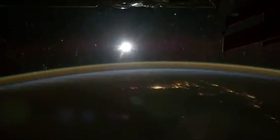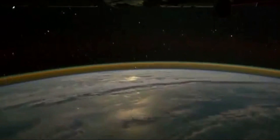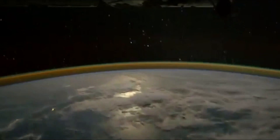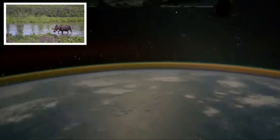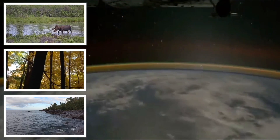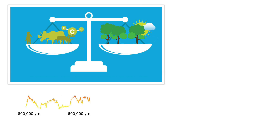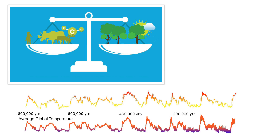Just like the water cycle, there is a natural carbon cycle present in our atmosphere. Carbon is the building block of life on Earth, and there is a natural carbon cycle between animal life, forests, and oceans. This cycle has been known to be in balance for over 800,000 years, with natural atmospheric carbon ranging between 180 and 280 parts per million.